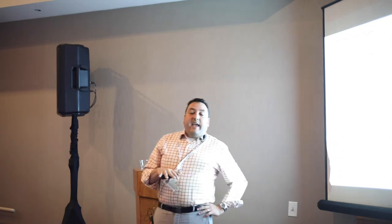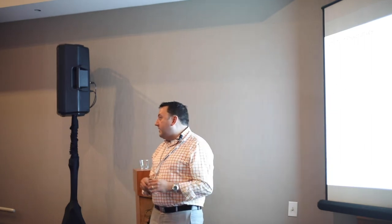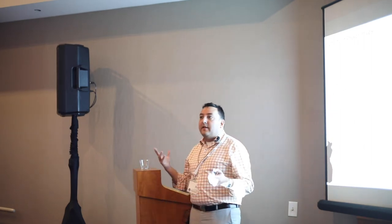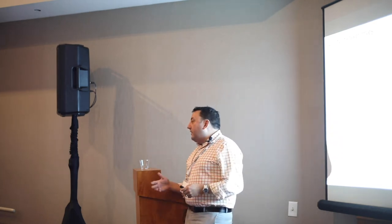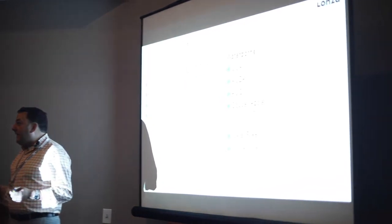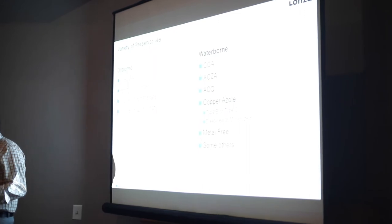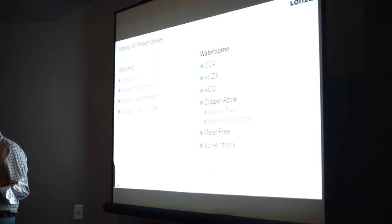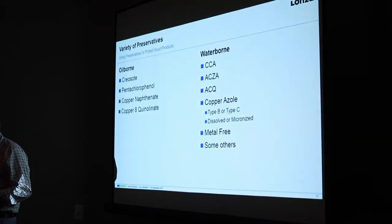Two common ways to categorize treated wood are oil-borne versus water-borne. Oil-bornes include copper naphthenate, pentachlorophenol, and creosote. Water-bornes include copper azole and CCA. ACCA is an industrial marine-approved water-borne treatment. There are also some metal-free options that we'll go through.